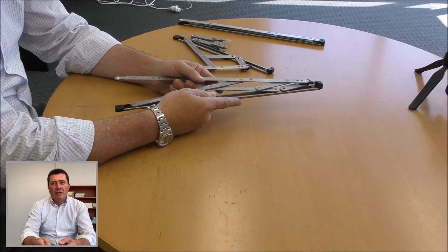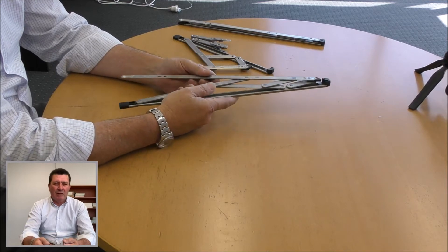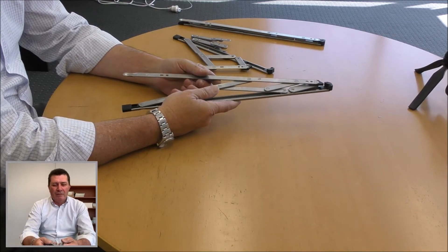You can use a butt hinge, you can use a two bar hinge. In our instance, we're recommending a four bar friction stay.